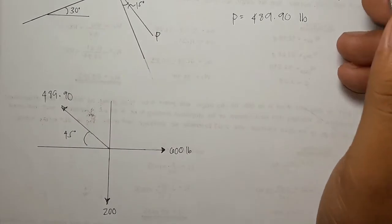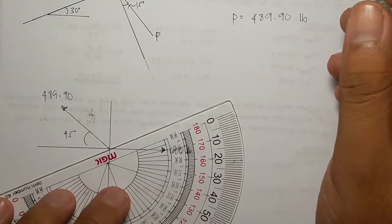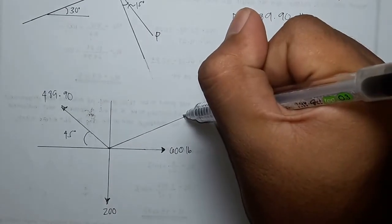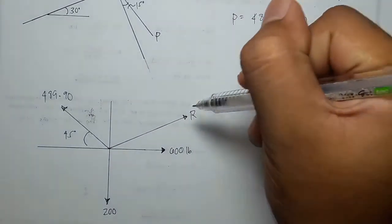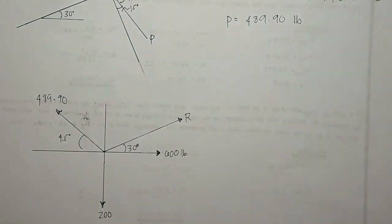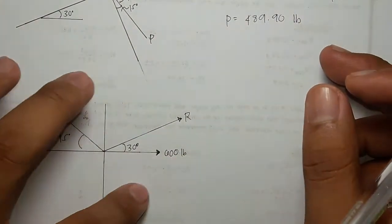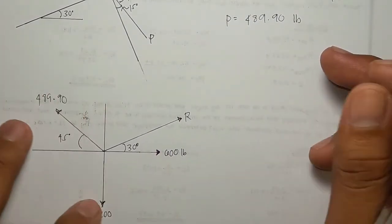And going down is our 200. We also have our R here, so it's 30 degrees. We can just still ignore the R because R is just summation of these three forces.